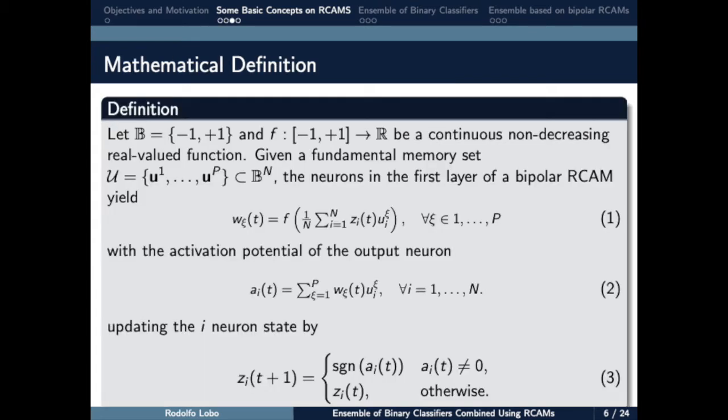Formally, given the binary set B and the continuous non-decreasing real function F, we want to store a fundamental memory set, denoted here by U. The RCAM model can recall a memory element, given as an input a corrupted version of one of these fundamental memories.